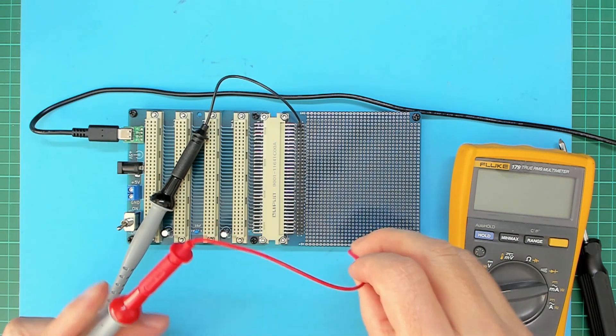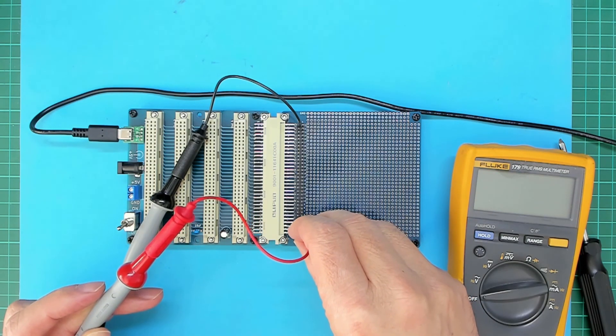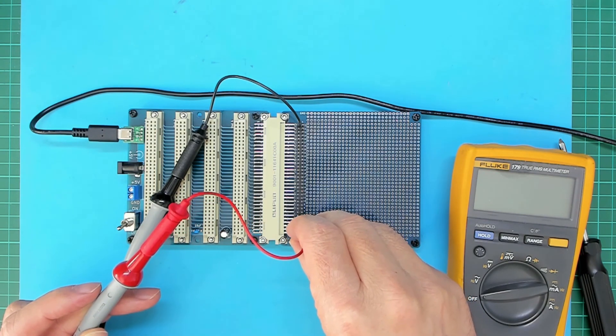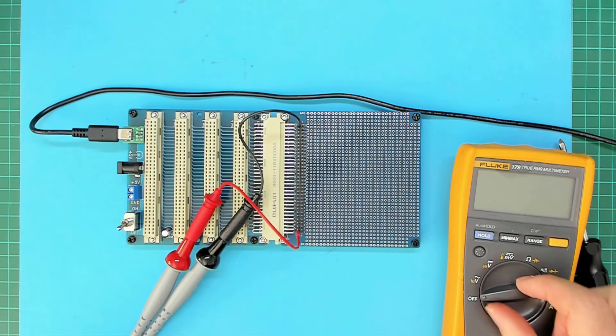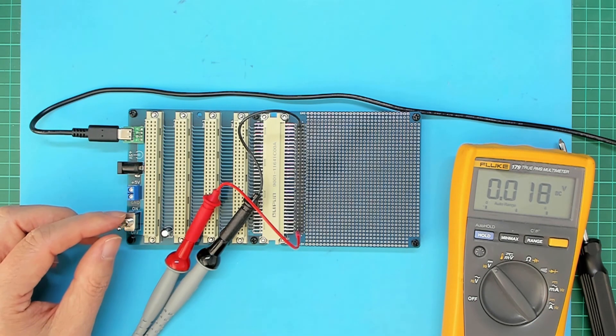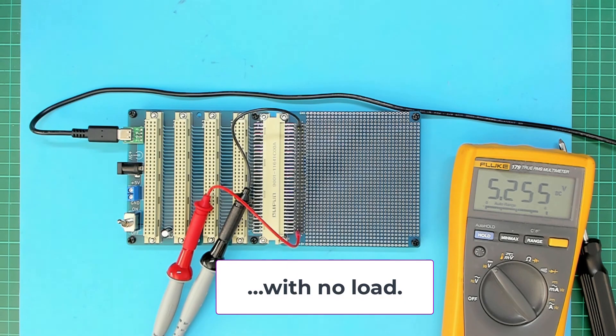So ground is on this side. It's pin 32 either the A or C row, both are connected to ground. And the five volts is the A and C row of pin one. OK, turn on the meter.